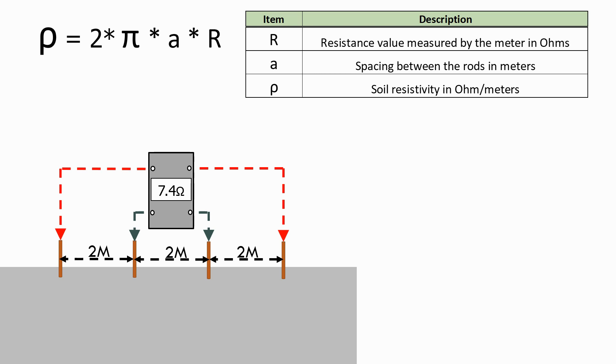As we can see on the meter, the value of R is 7.4 ohms and the spacing, A, is 2 meters, which will measure the soil resistivity at a depth of 2 meters. Let's now put these values in the formula, giving us a soil resistivity of 92 ohm meters at a depth of 2 meters.